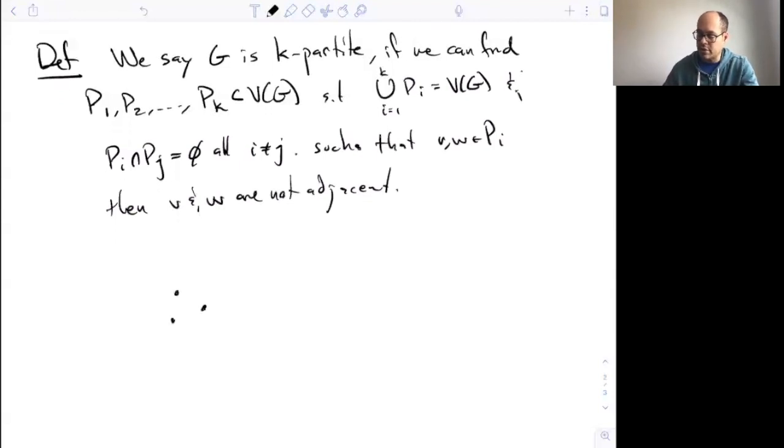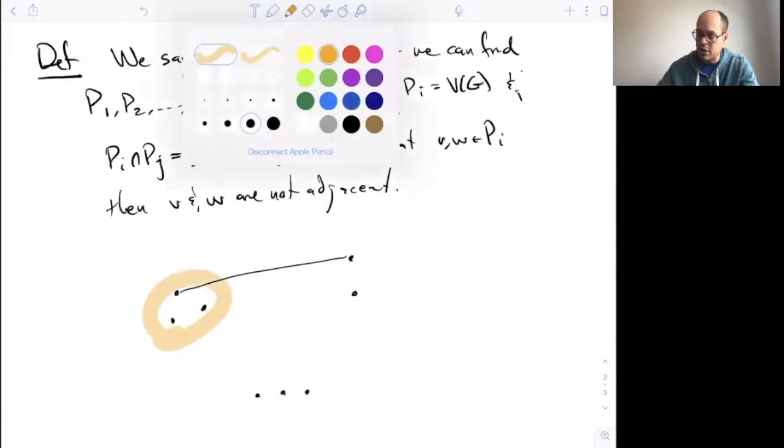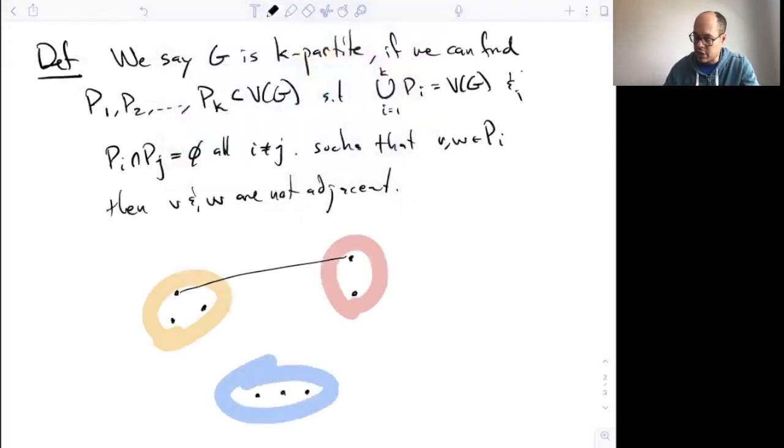This is just the same kind of notion here. Let me draw an easy example of a tripartite or three-partite graph. My parts are going to be these three parts. To say that it's k-partite means the only edges I'm allowed to draw have to go between different parts. I'm not allowed to have two orange ones connected, that would be a no-no, not allowed to have the two red ones connected. So this is an example of a three-partite or tripartite graph.